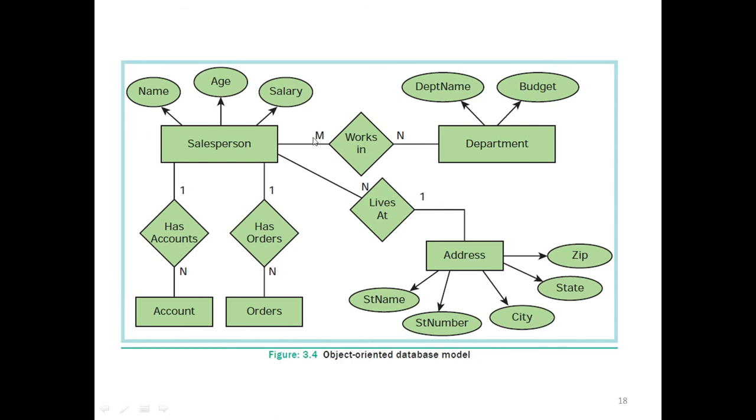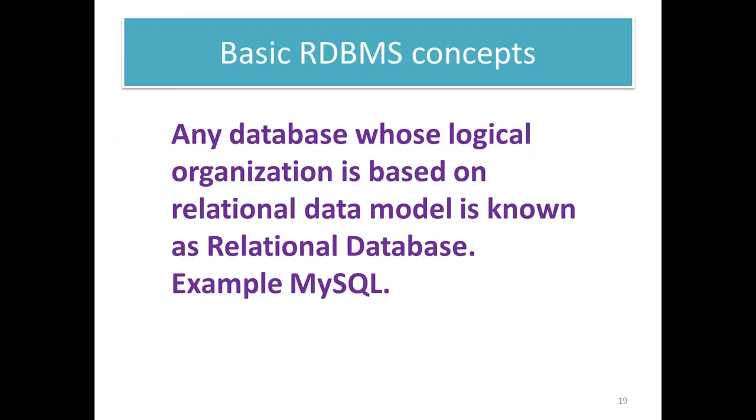Work in M, N, lives at, works in department, department name, budget, lives at address, street name, street number, city, state, zip, like this. Object, you see the thing. Simply, we say object means thing. We have stepped on this concept. It is a database model.